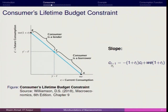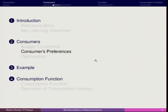Second, if you want to calculate the slope of the budget line, you can simply go for Ct+1 upon Ct, which becomes minus 1 plus R. So the slope of this budget constraint is minus 1 plus R. I hope the lender and borrower case is now easier to understand.